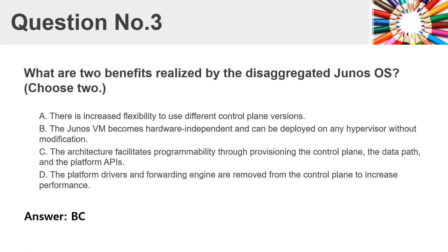Question number three. What are two benefits realized by the disaggregated Junos OS? Choose two. A. There is increased flexibility to use different control plane versions. B. The Junos VM becomes hardware independent and can be deployed on any hypervisor without modification. C. The architecture facilitates programmability through provisioning the control plane, the data path, and the platform APIs. The platform drivers and forwarding engine are removed from the control plane to increase performance. Answer: B, C.